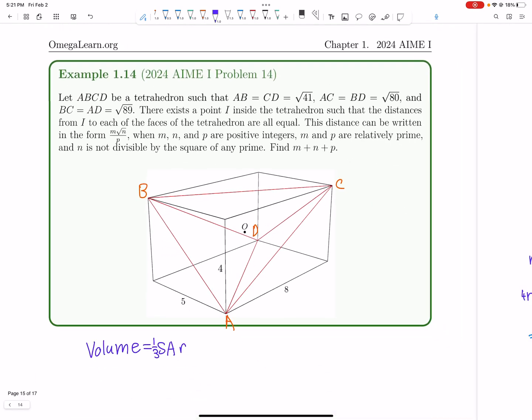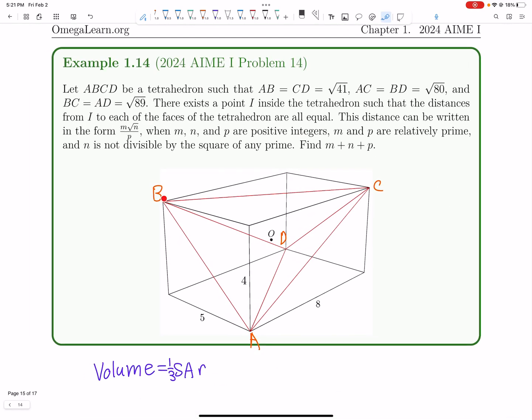So there's actually a really cool kind of trick here, which is to put a rectangular prism around it. And AB is square root of 41, so we have four. So the thing is, we can say this is four squared plus five squared the square root of that. Four squared plus five squared is 41. 80, that's four squared plus eight squared. 89 is five squared plus eight squared. It like works out perfectly.